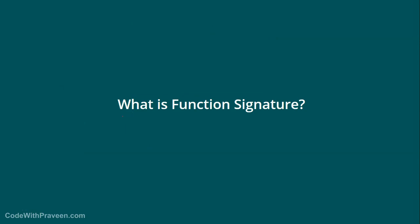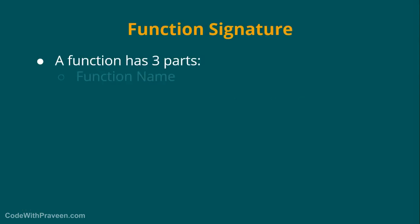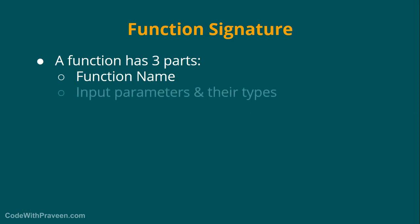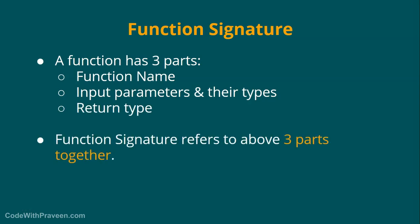I also want to touch upon one terminology specific to functions called the function signature. What is the function signature? A function has basically three parts: the function name, the input parameters along with their types, and finally the return type. A function signature refers to all these three parts together.